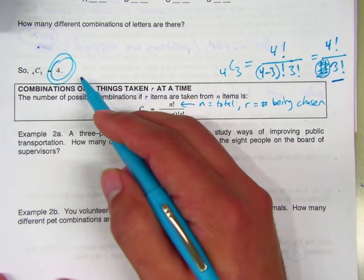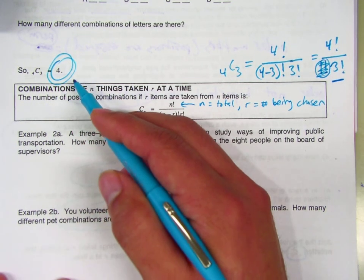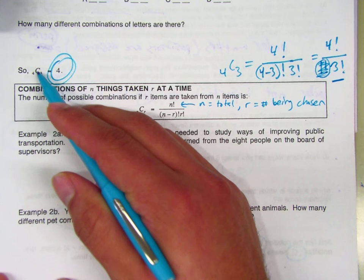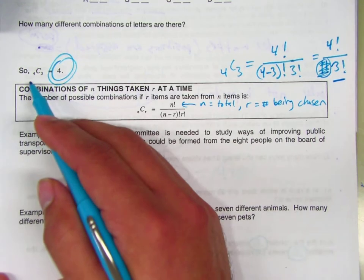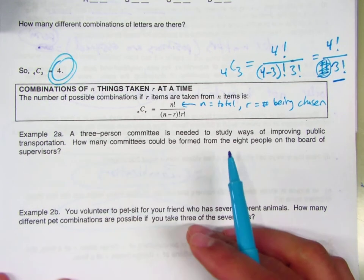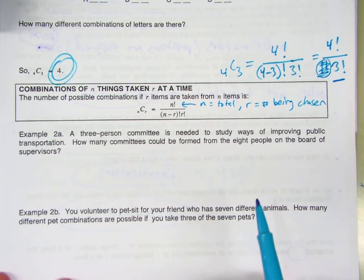On the calculator, this works the same way. You would just, instead of doing 4P3, which is how we're going to get 24, you do 4C3, and now we get a slightly different answer.